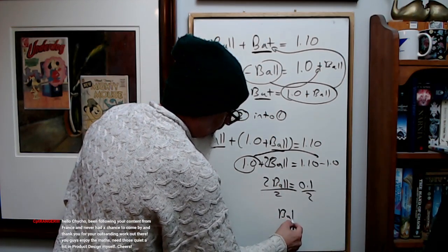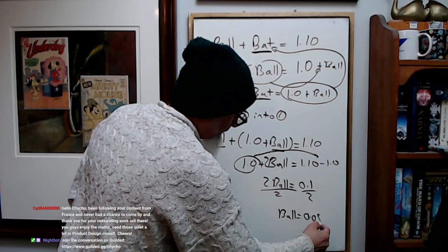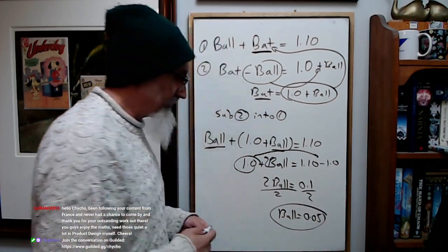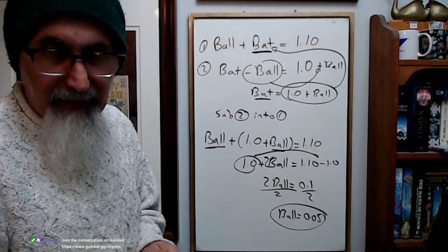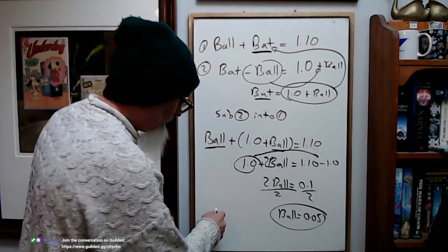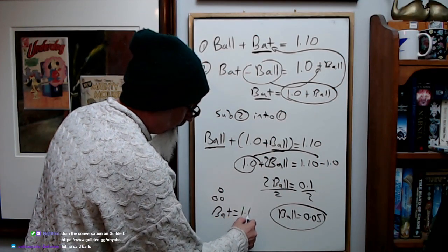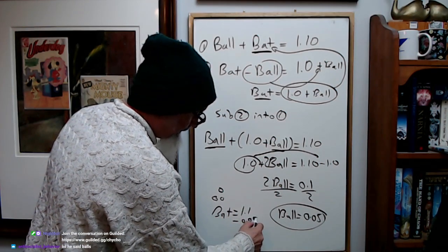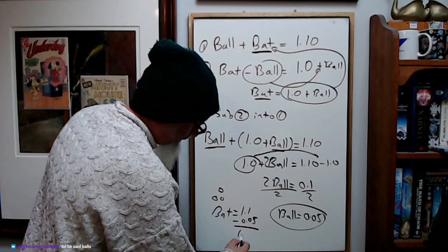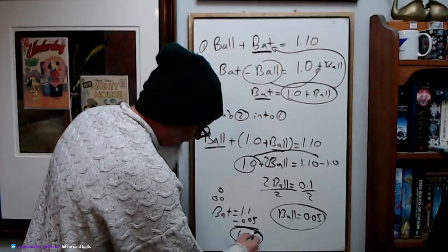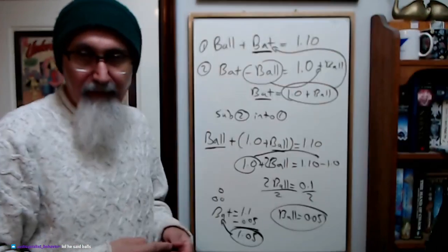So ball equals 0.05, that's how much the ball costs. And the bat would be 1.10 minus 0.05, which equals 1.05. That's how much the bat would cost.